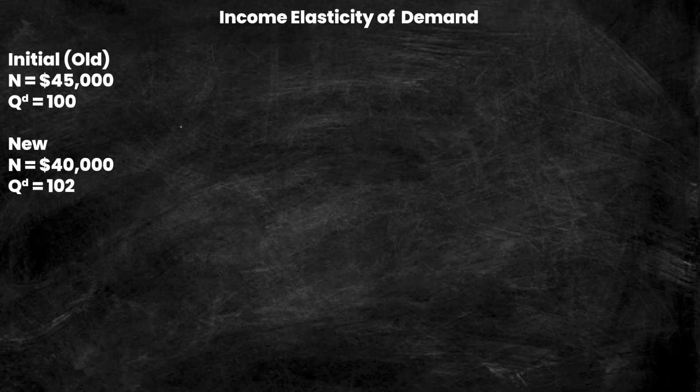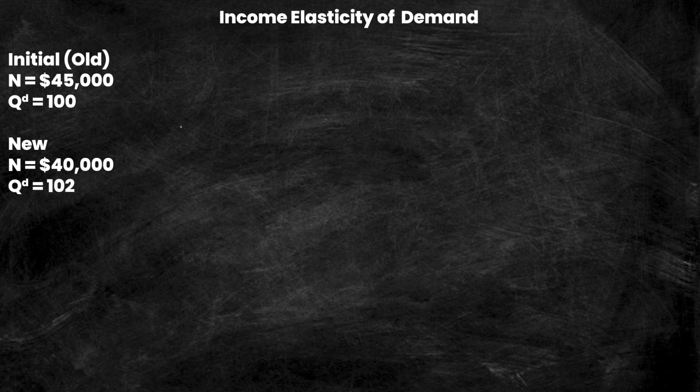Similar to last week, we're going to have four values given to us in an income elasticity of demand question. We're going to have an initial income and initial quantity demanded, as well as a new income and a new quantity demanded. I have those written down on the side of this board. Here we see income, represented by N, is falling from $45,000 to $40,000, so income is actually going down.